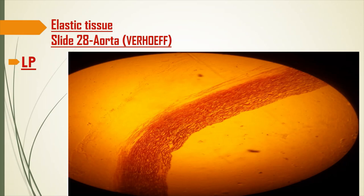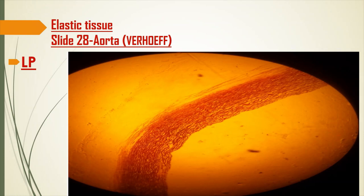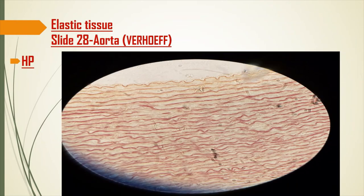At low power, the wavy fibers in the aorta are the elastic fibers. Make this diagram at low power showing the lumen and the elastic fibers. At high power, the regularly arranged wavy lines are the elastic fibers. The lumen is on one side, and beyond that is the tunica media containing the elastic fibers. Draw these at both low and high power.